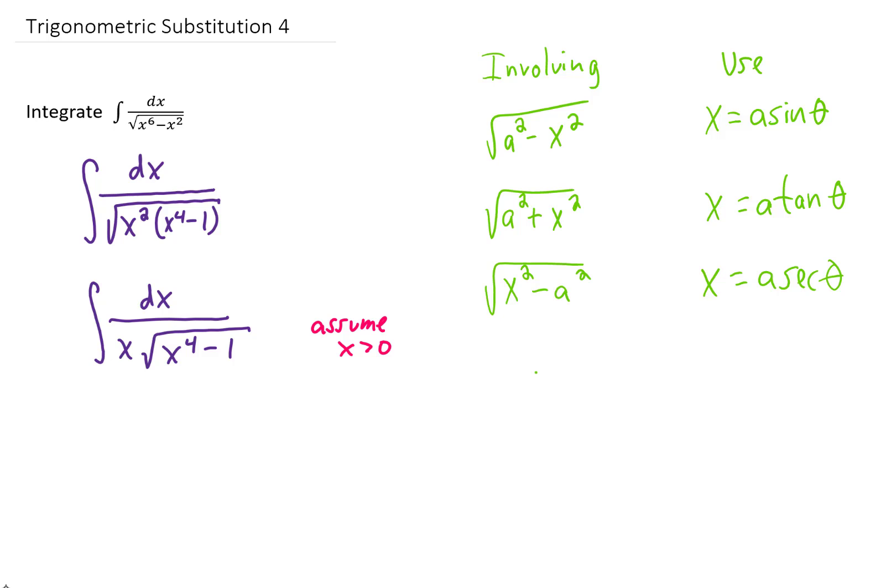So at this point, again, notice that a u substitution isn't going to work. And also notice that we still don't have any of the forms, at least not exactly, that you might expect in a trig substitution problem. All of our trig substitution forms have x squares in them, and we have an x to the 4.